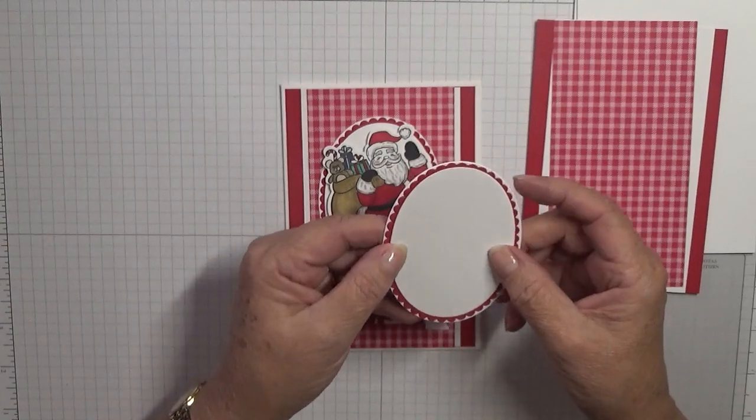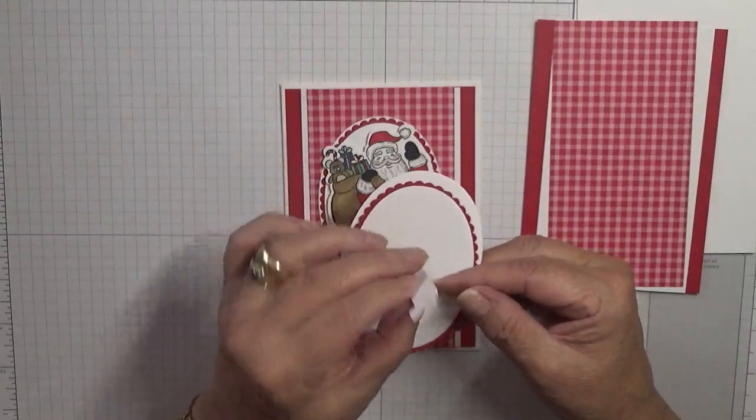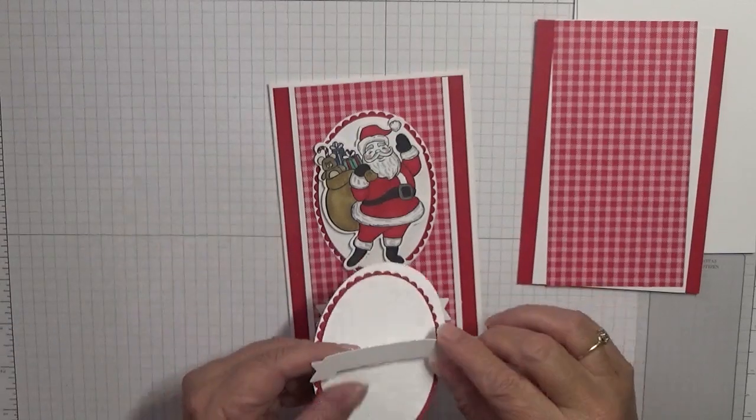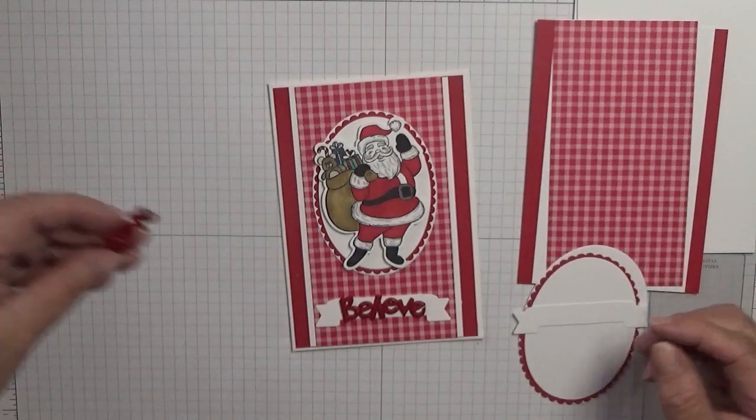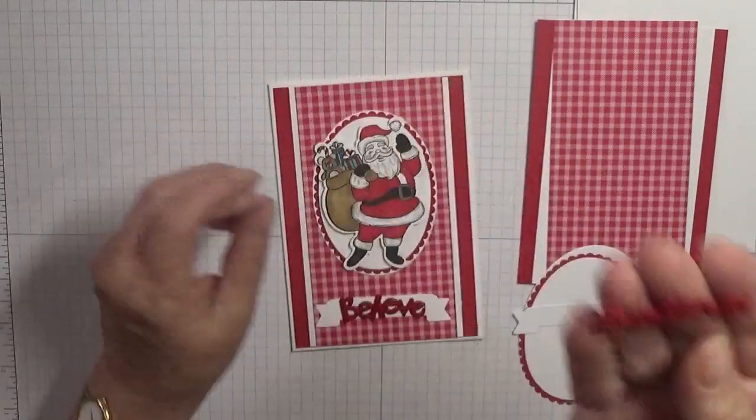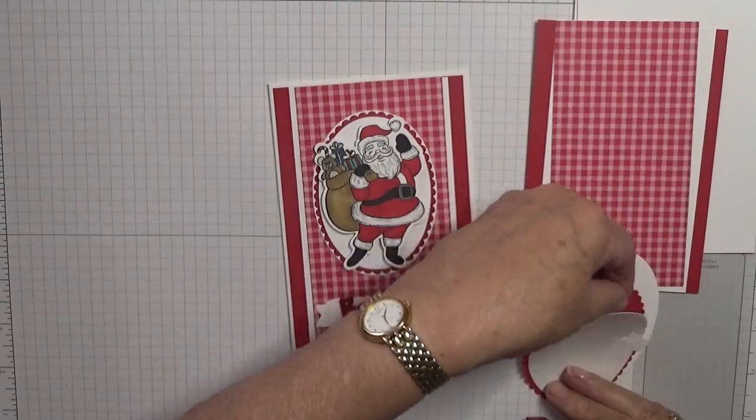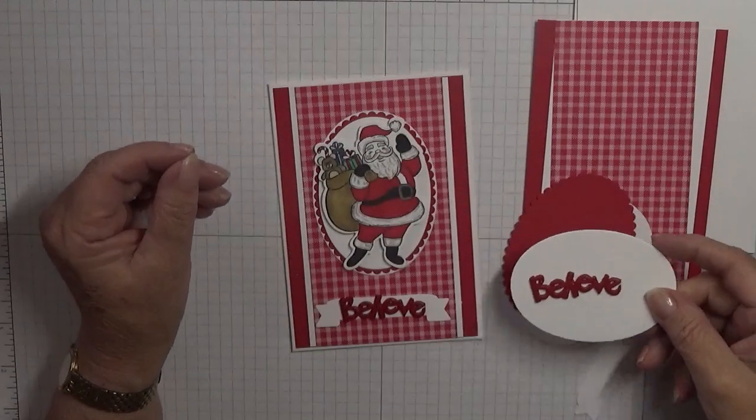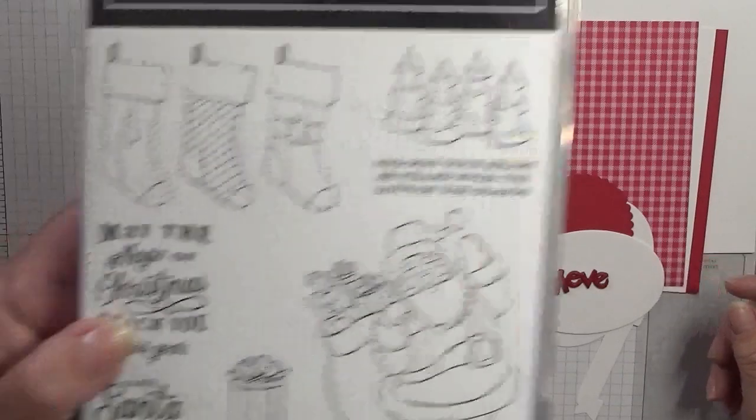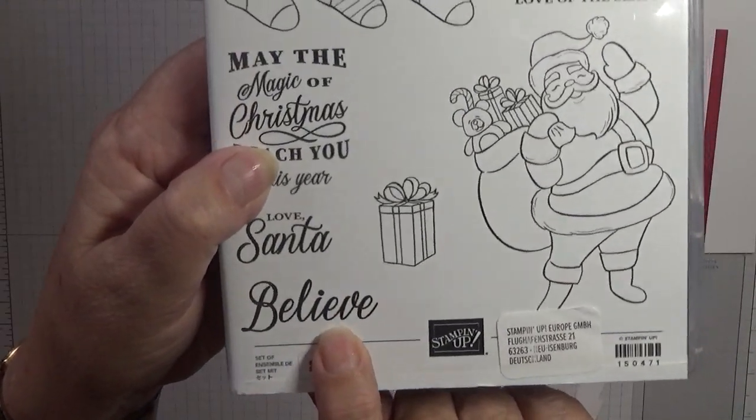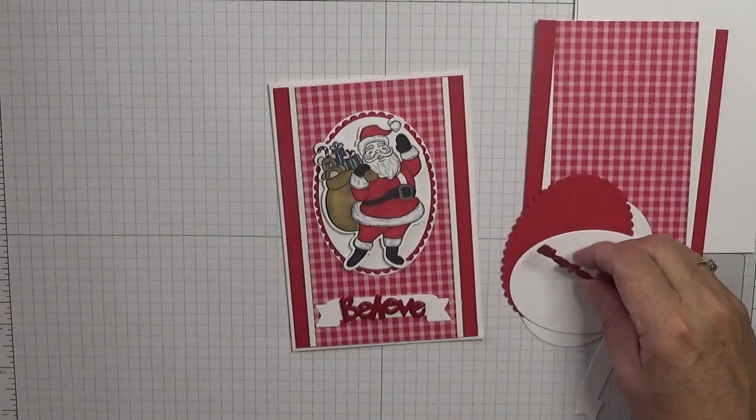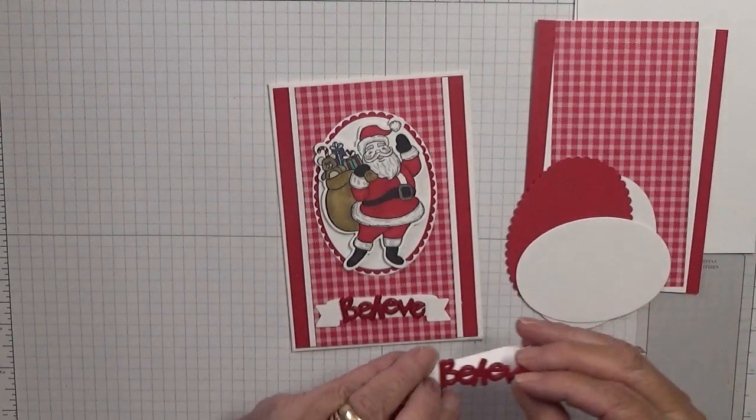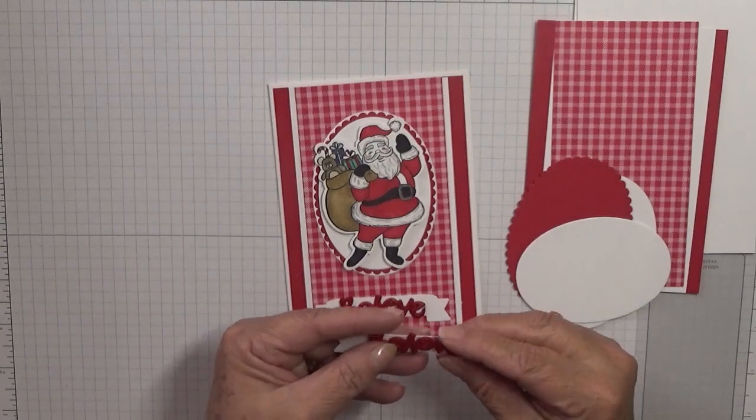I've also used the banner out of the number dies to put across the bottom. I've also got a wooden embellishment that says 'believe.' There is actually a stamp with the word believe but I found these in my friend Brenda's stuff and thought I'd use it. That will stick on there like that.